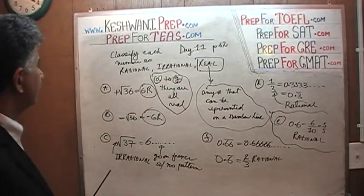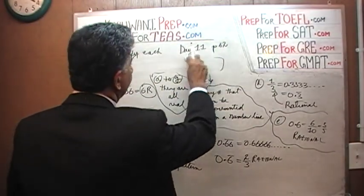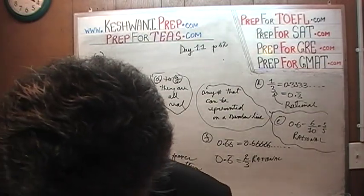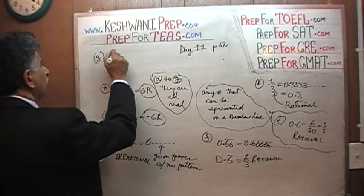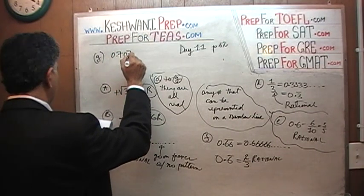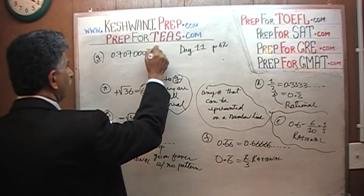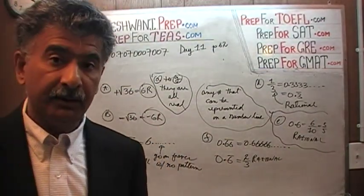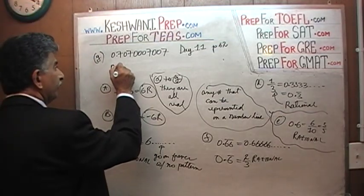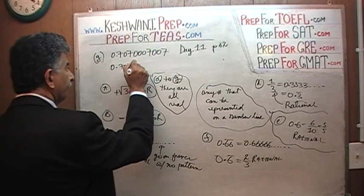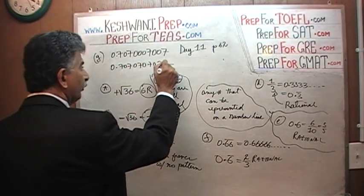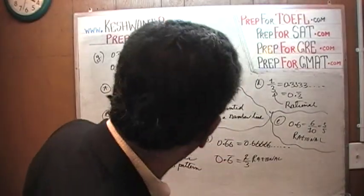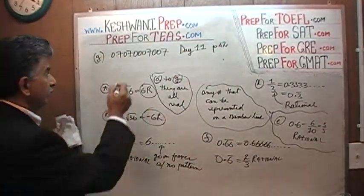Finally, G. In G we have 0.7070...007...007... As you can see, there is no rhythm or rhyme to it — there is no pattern. It may look like there is some pattern, but there isn't. If we had something like 0.070707... repeating, that would be rational. But that's not what we have here. There is no pattern to this number, so that number is irrational.